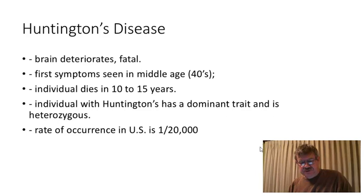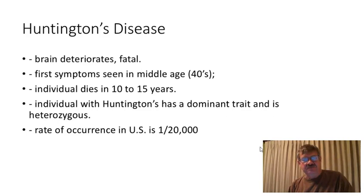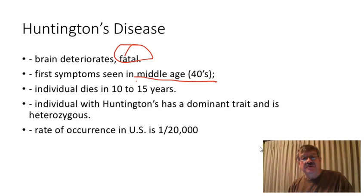This is video 2 on the genetics problems. Let's look at this next example: Huntington's disease. Huntington's disease is another one that affects the central nervous system and is 100% fatal. The only thing is, Huntington's disease doesn't begin to show its initial symptoms usually until the person is in middle age.